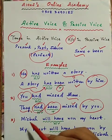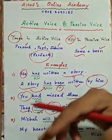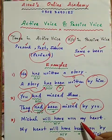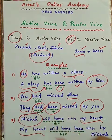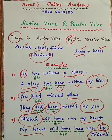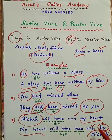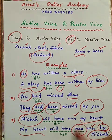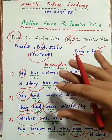تیسری مثال: 'Miss Ba will have won my heart' — یعنی Miss Ba میرا دل جیت چکی ہوگی۔ 'My heart' object سے subject بن جائے گا اور same رہے گا۔ 'Miss Ba' noun ہے تو 'by Miss Ba' بن جائے گا۔ 'Won' already third form میں ہے، same رہے گا۔ 'Will have' future perfect کی helping verb ہے، 'my heart' کے حساب سے same رہے گی، اور plus میں 'been' add ہوگا: 'My heart will have been won by Miss Ba.'